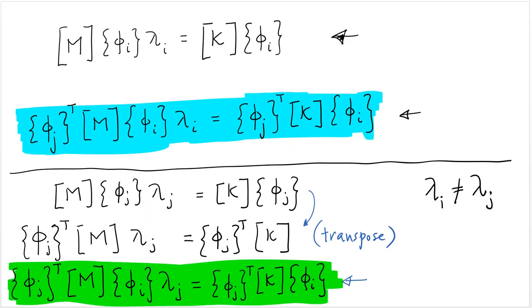Well, the left-hand side is the same, except that lambda i and lambda j are different. And that's a key fact. They're distinct. But the right-hand side is exactly the same. So how is that possible?